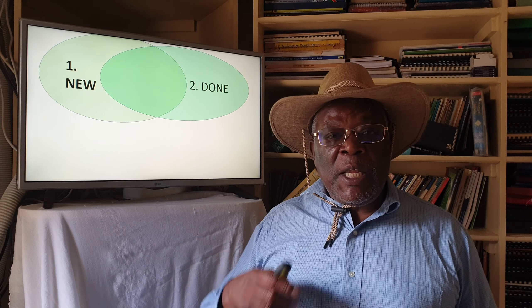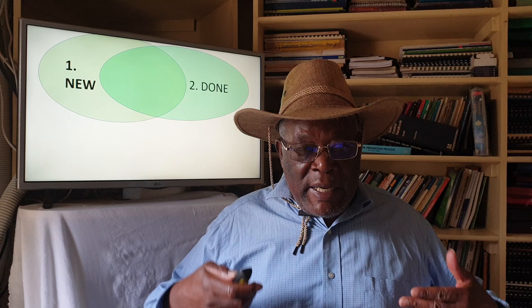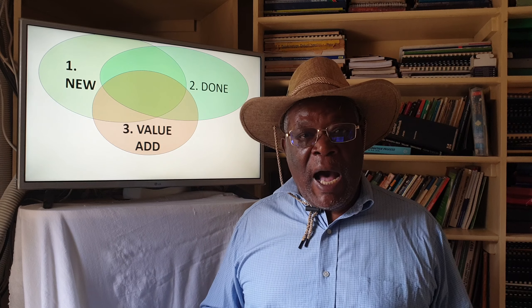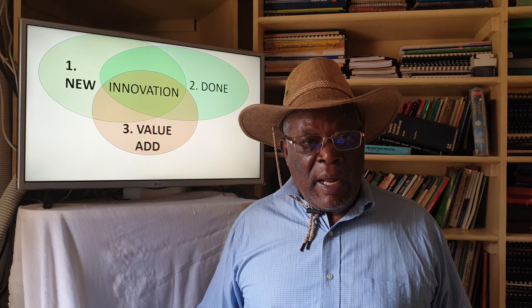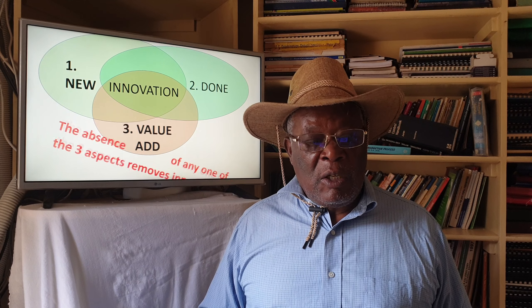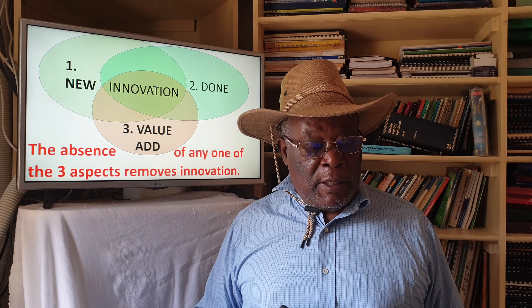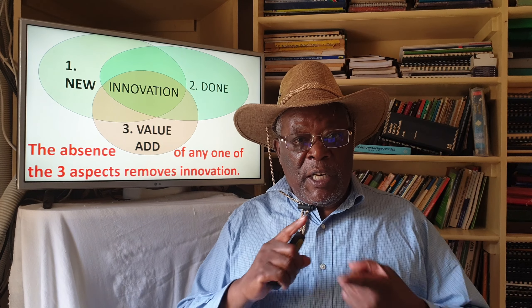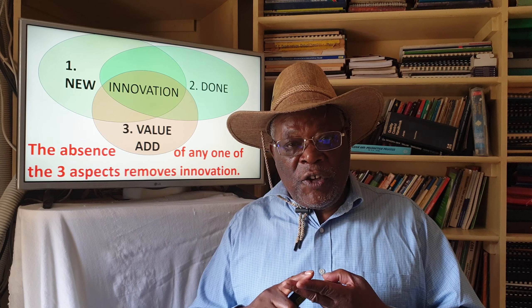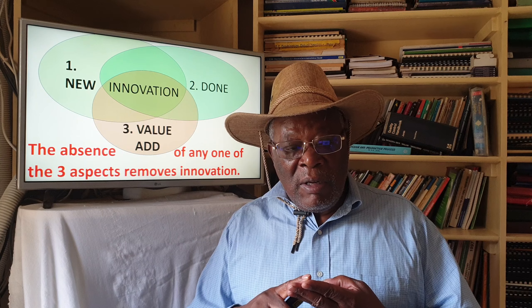Which are the three aspects? The first aspect is new. The second aspect is implementable — it should have the ability to be done, to be implemented, to be executed. And third, it must add value. That is when innovation comes in. The absence of any of the three aspects removes innovation. If there is no newness, no value addition, and it's not implementable, then it's not innovation.